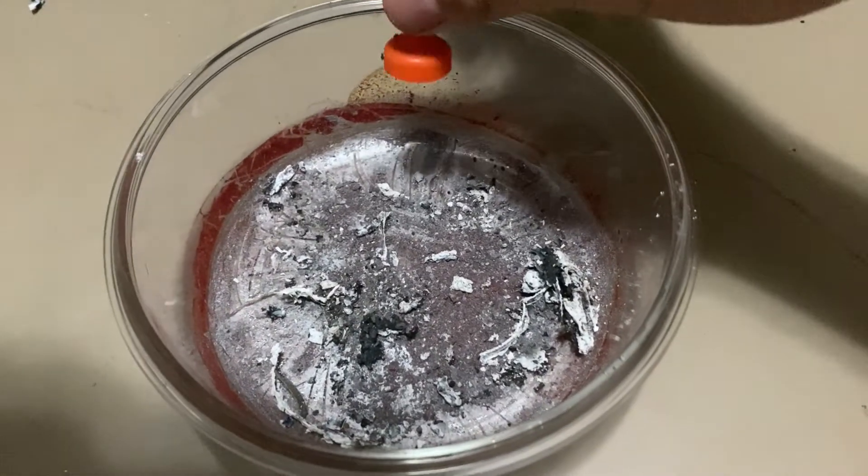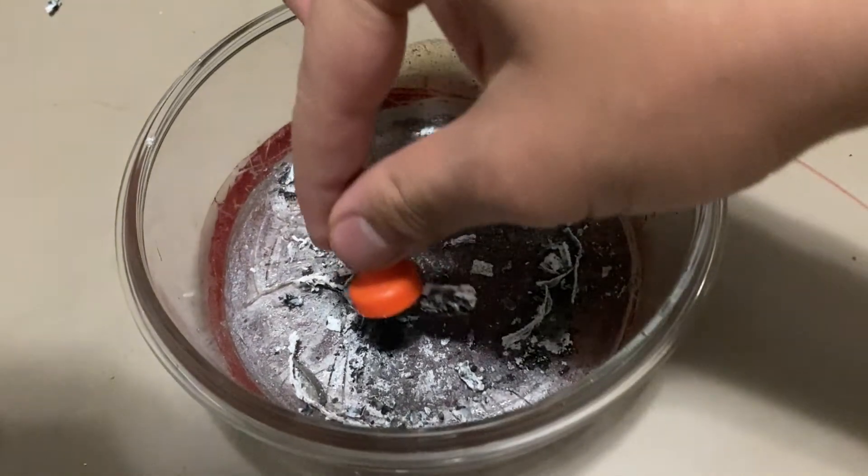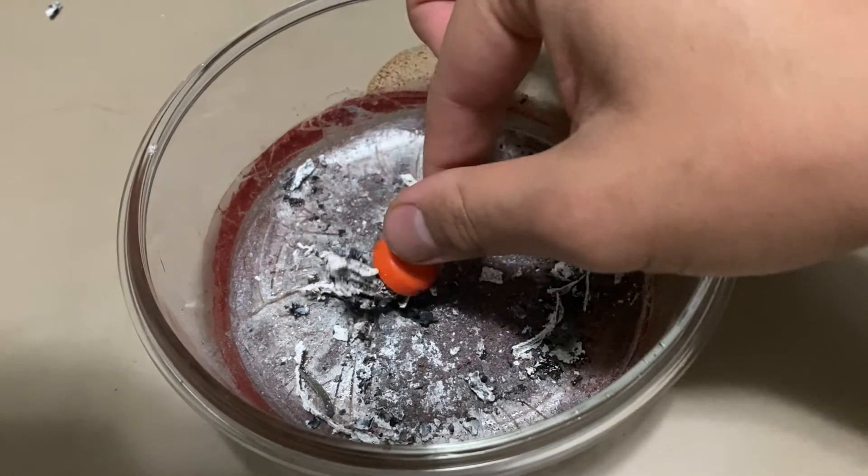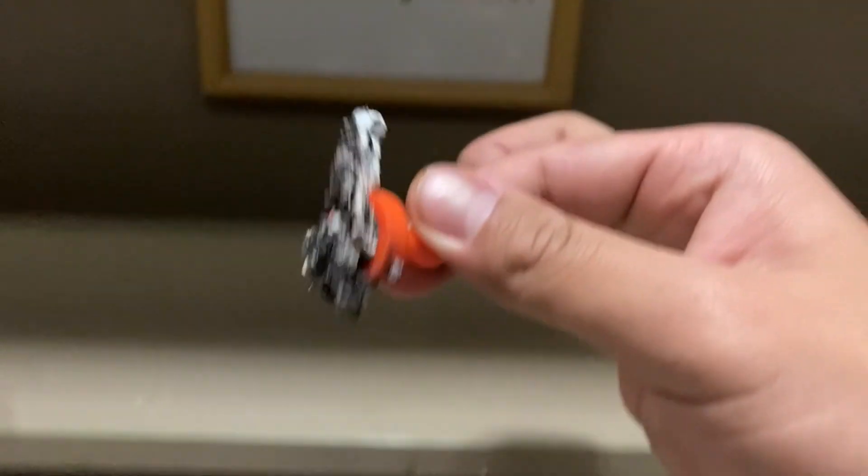Now, to show that we actually made iron from vitamin pills, all we need to do is to place a piece of magnet in the mixture, and a black solid will be attracted to it.